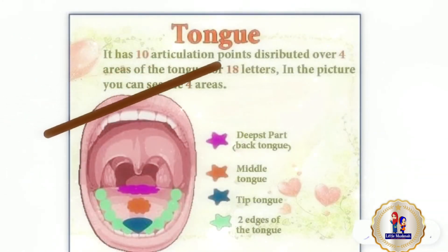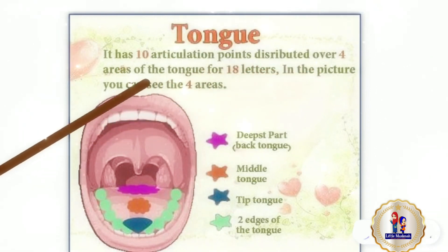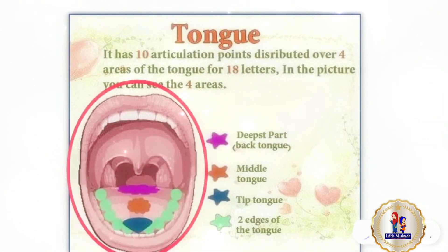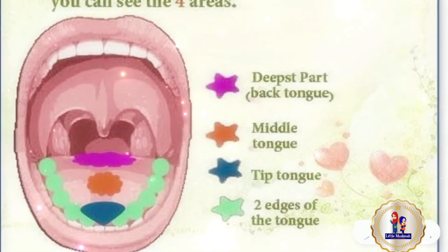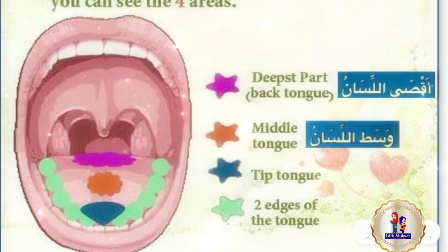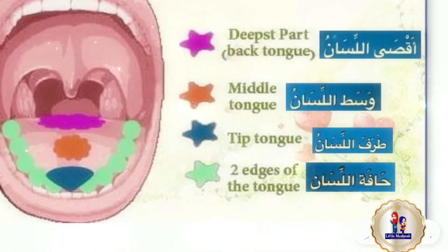The tongue has 10 articulation points distributed over 4 areas of the tongue for 18 letters. In the picture, you can see the 4 areas: the deepest part of the tongue, the middle part of the tongue, the tip of the tongue, and the edge of the tongue.